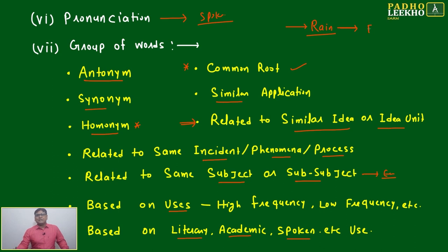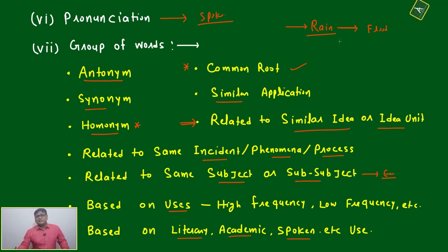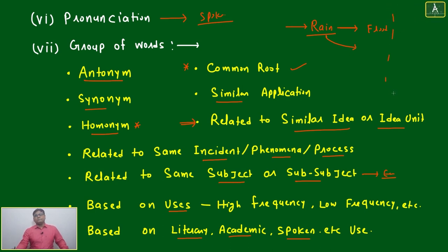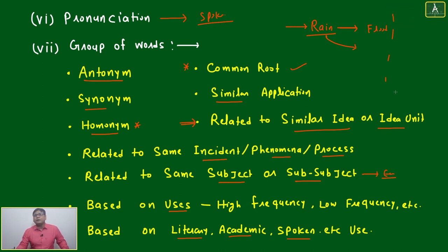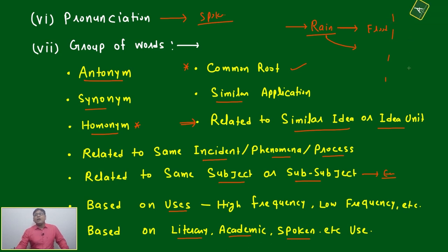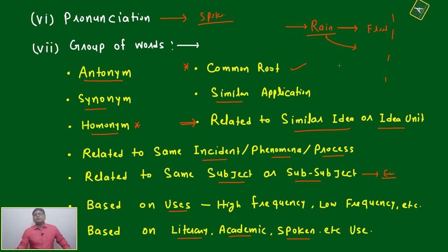Why are we focusing on rain? Because rain is capable of creating so many devastating things — it can create flood, it can create landslide, it can create so many calamities. Related to rain, how many different words can be used — what are the effects or impacts of rain? Different effects like landslide, flood — after the downpour, like Kedarnath, if you remember, this is one of the impacts of rain.